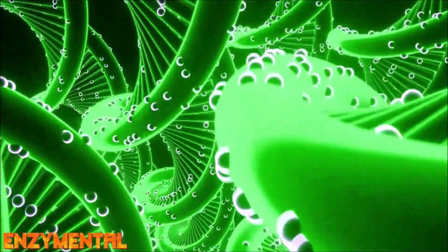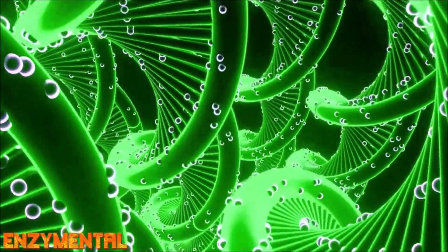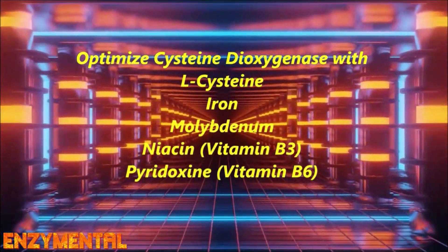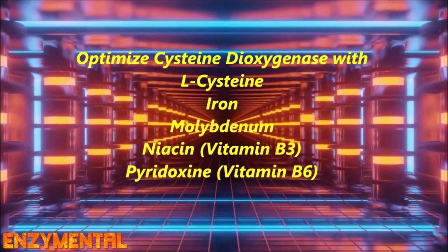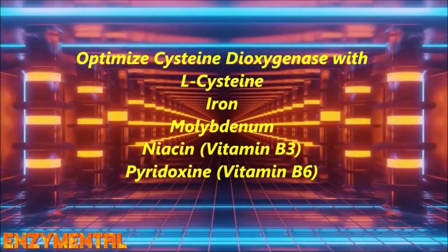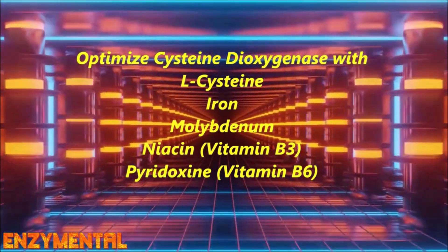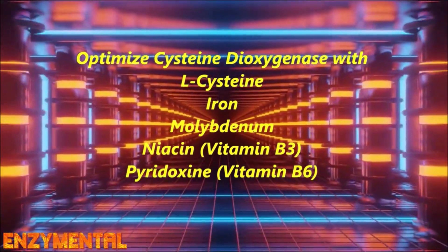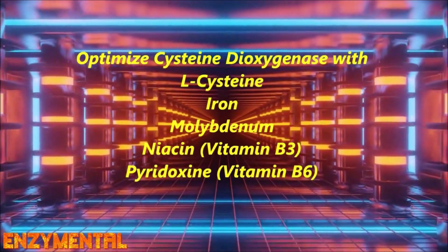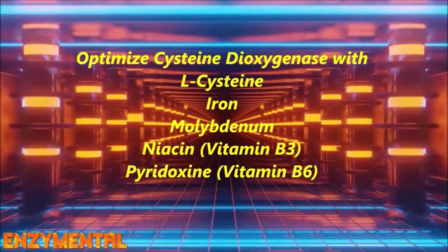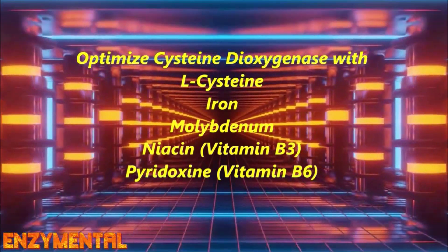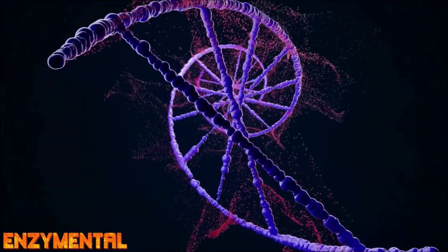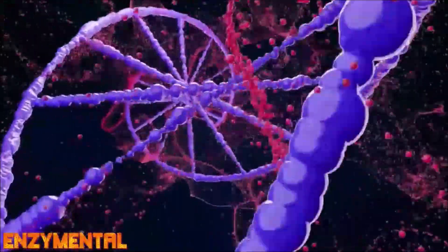There are also some other nutrient cofactors for optimal cysteine-dioxygenase activity, and these include additional L-cysteine, iron, the trace mineral molybdenum, and also the B vitamins niacin and vitamin B6. While you can definitely take any of these nutrients individually, it is helpful to get these B vitamins as part of a full B complex — and especially a coenzymated B complex, because this preparation gives you the most active forms of all your B vitamins.